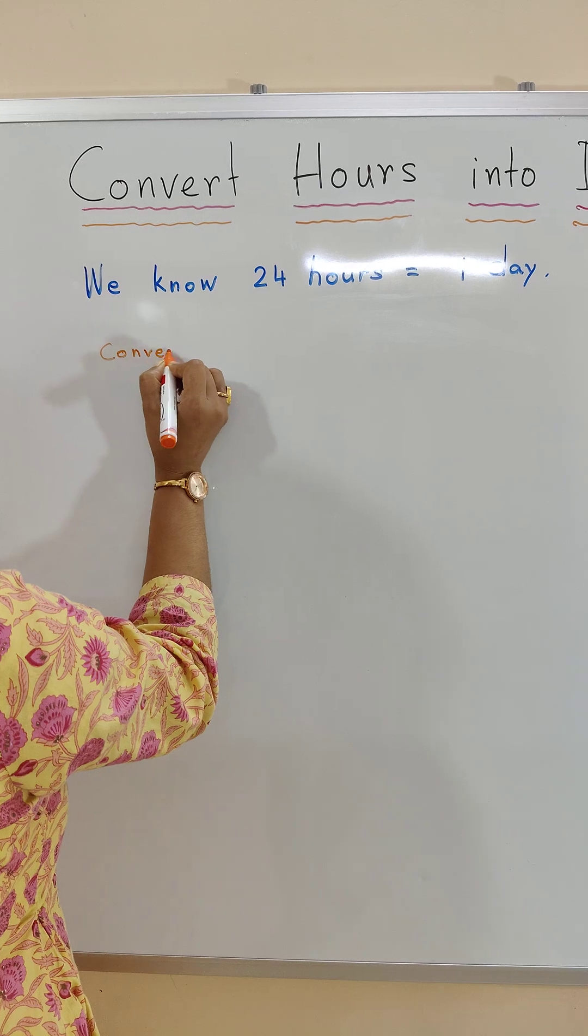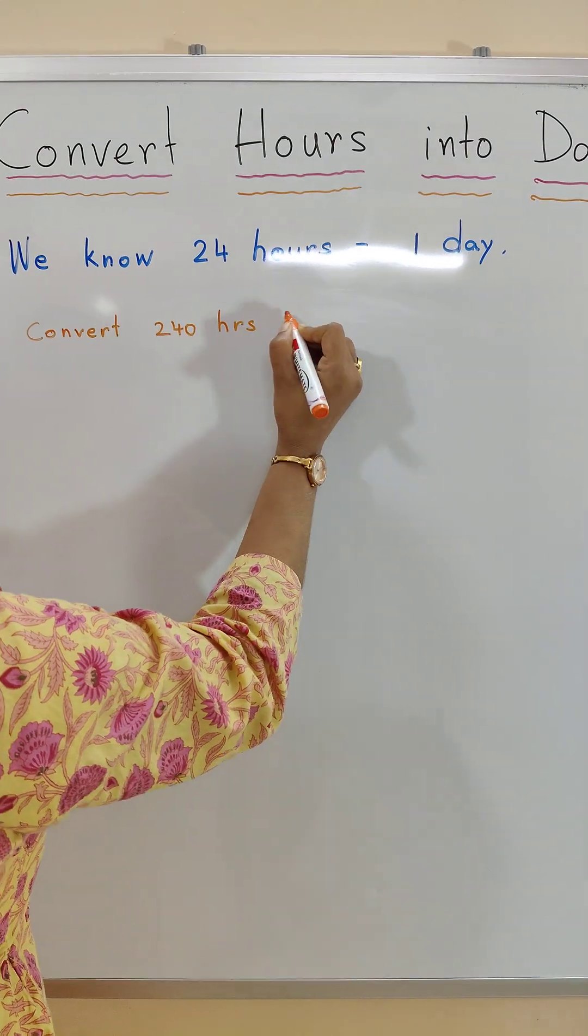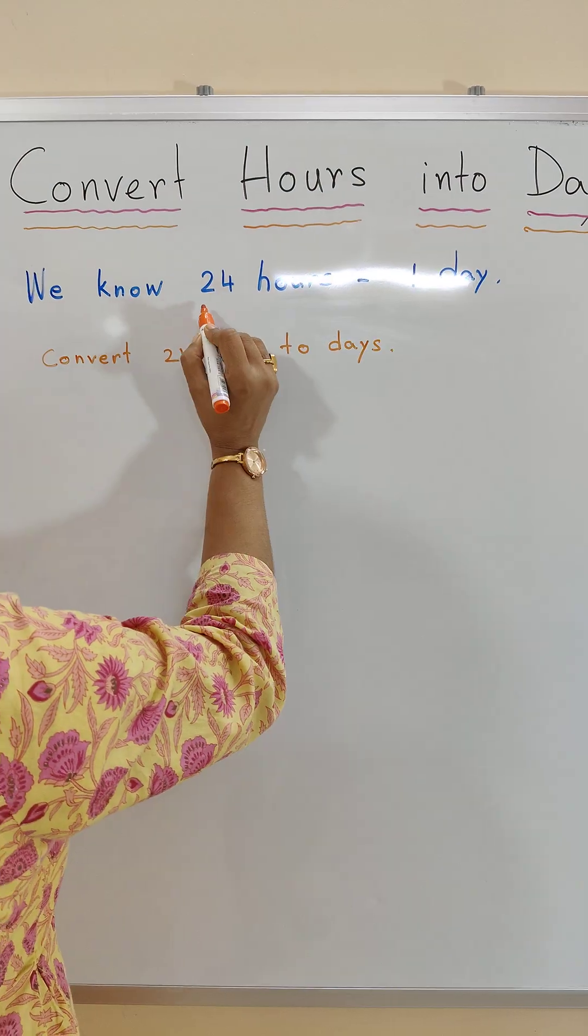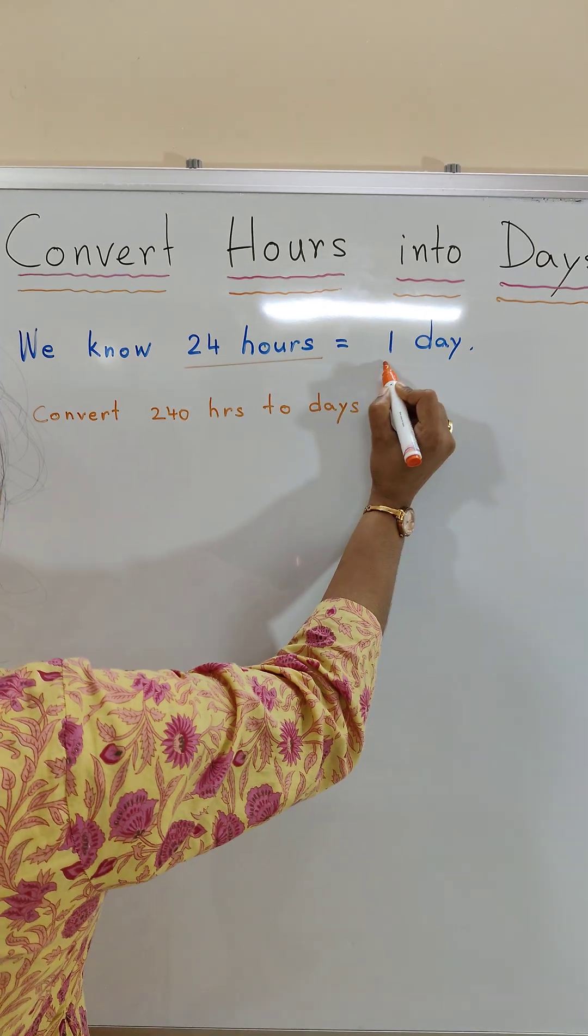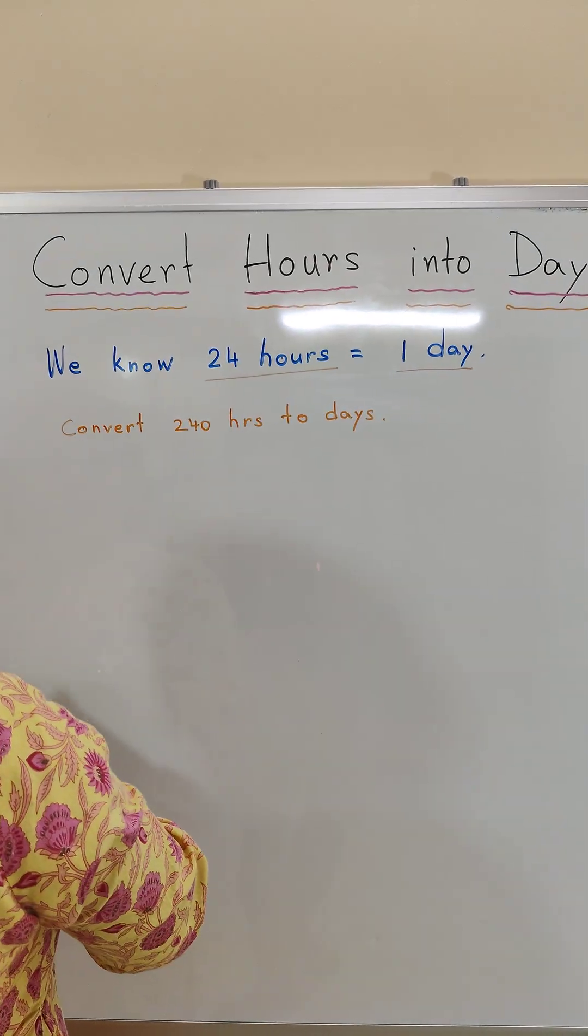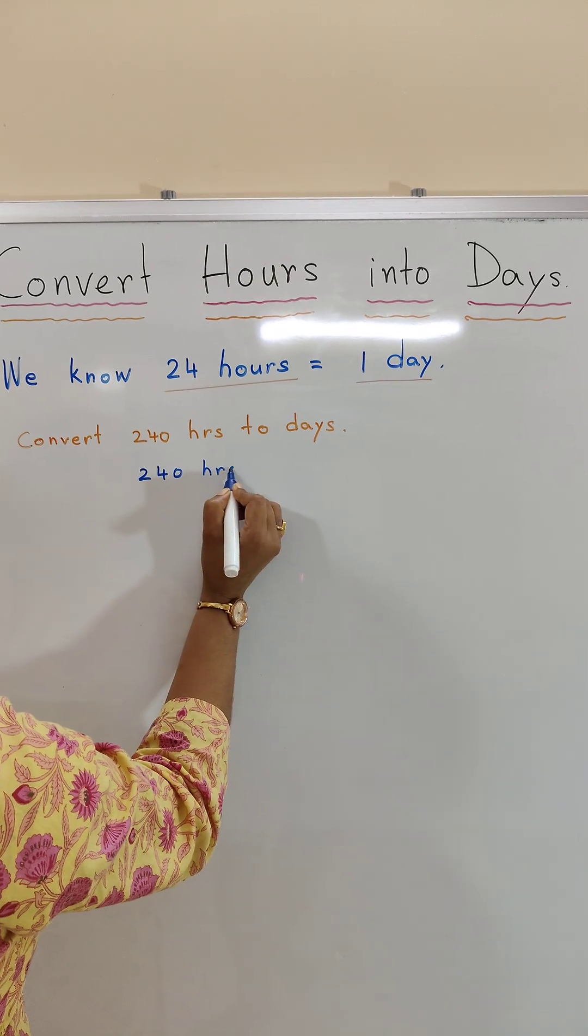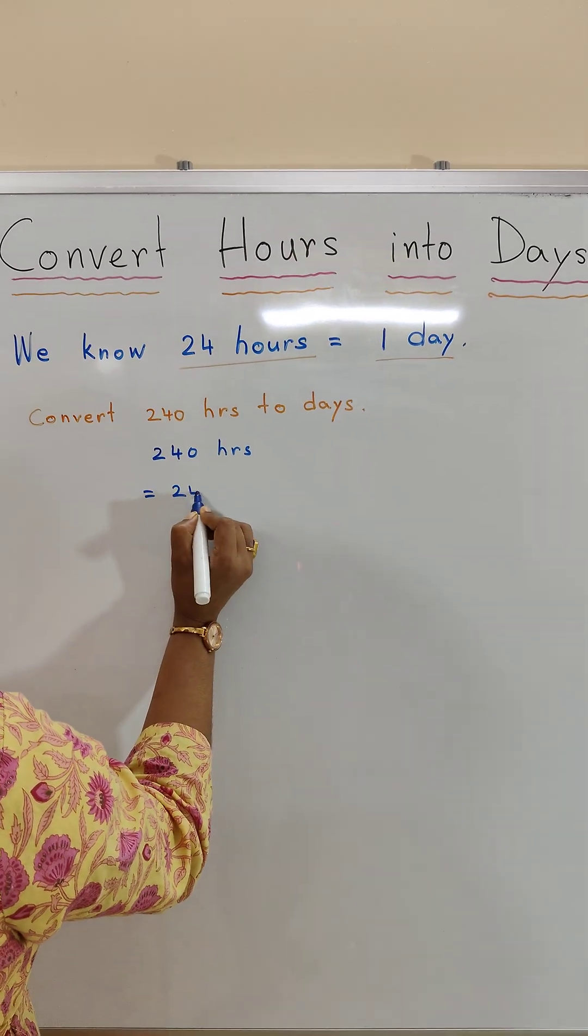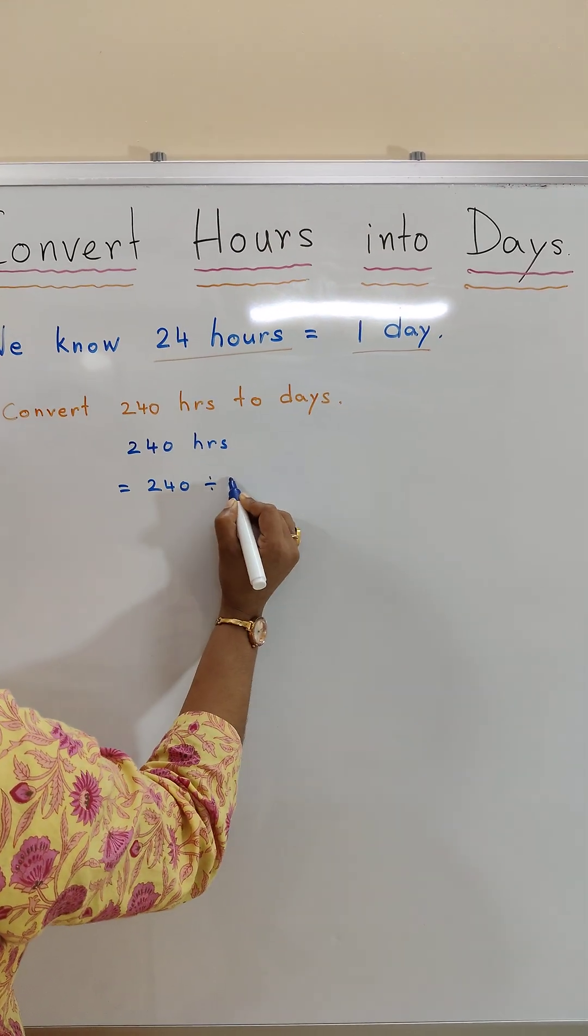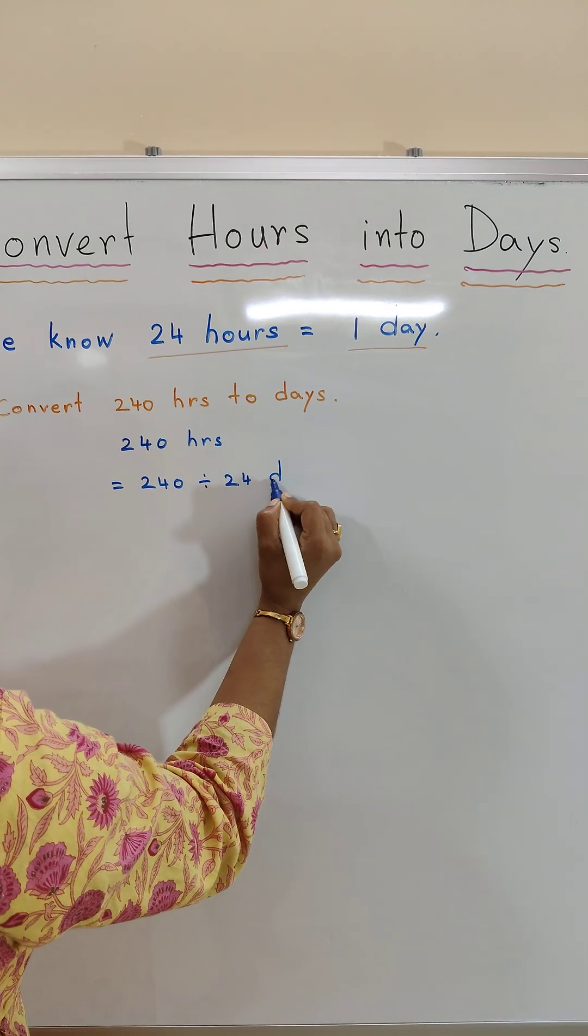For example, convert 240 hours to days. We know 24 hours is equal to 1 day. Therefore, 240 hours is equal to 240 divided by 24 days.